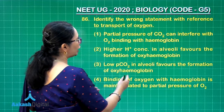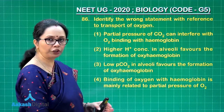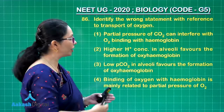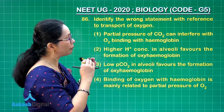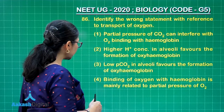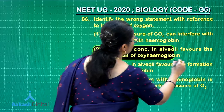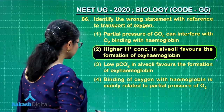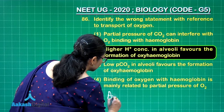Binding of oxygen with hemoglobin is mainly related to partial pressure of oxygen — that is right. That is the reason when we go to higher altitudes we have breathing distress, because the partial pressure of oxygen is low over there. So the incorrect statement relating to transport of oxygen is the second one, and that would be our correct answer.